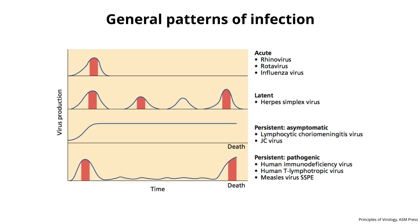One of the major ones we'll talk about today is the latent persistent infection, where the virus is with you for the life of the host, but there are periods of virus production followed by or interspersed with periods where there is no virus detectable at all. That's why we call it latent — the genome is there but the virus is not being produced. Herpes simplex is a great example. You have periods of what look like acute infections with virus production accompanied by disease, or maybe not — viruses can be asymptomatic — and then the virus is seemingly cleared. But the genomes are there and they can be reactivated. Some people have a monthly reactivation of herpes simplex virus.